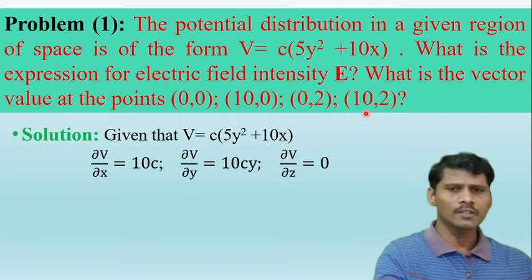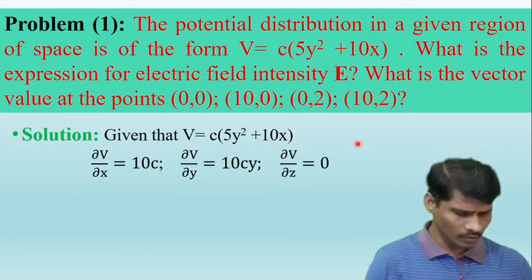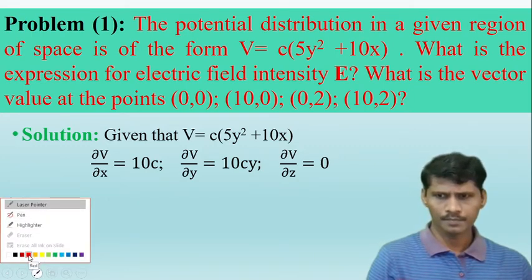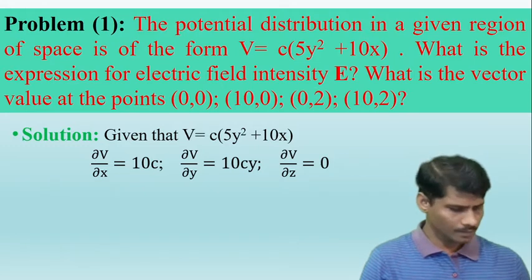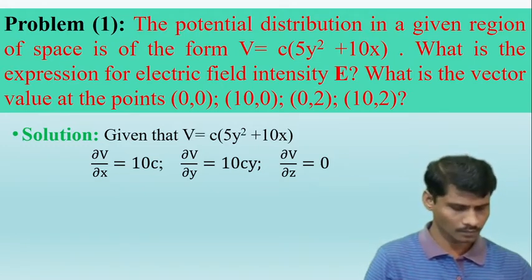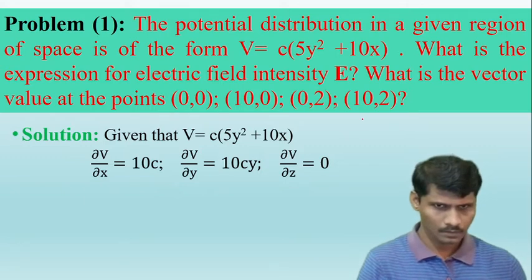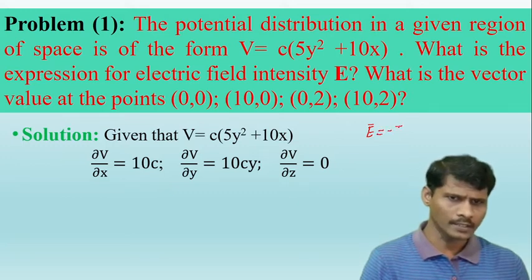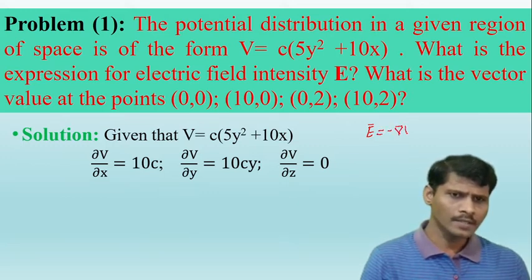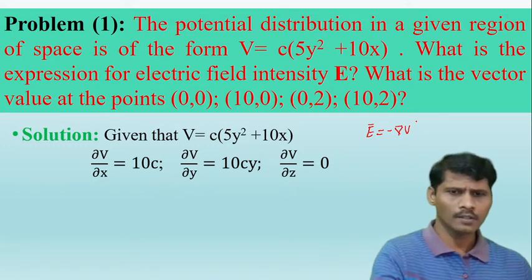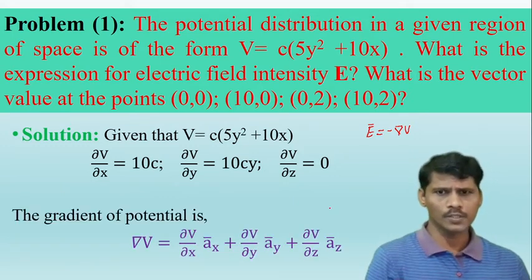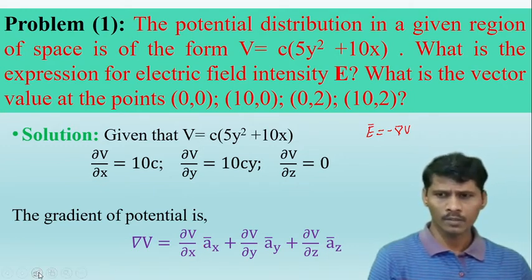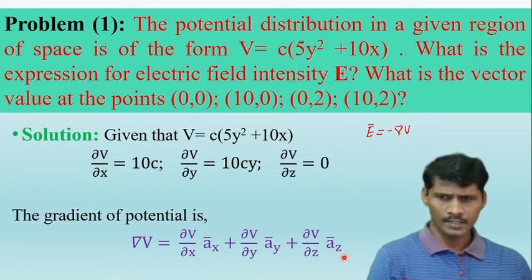The relation between electric field intensity and electric potential is: E-bar = −∇V, where ∇V is the gradient of the potential. In the Cartesian coordinate system, the gradient of the potential ∇V = (∂V/∂x)·ax + (∂V/∂y)·ay + (∂V/∂z)·az.